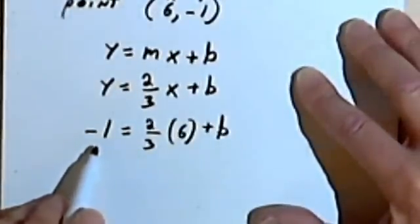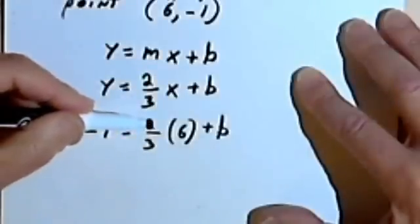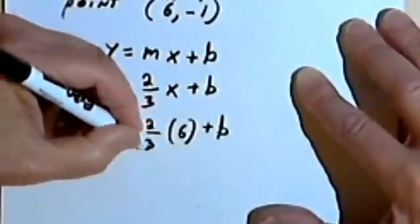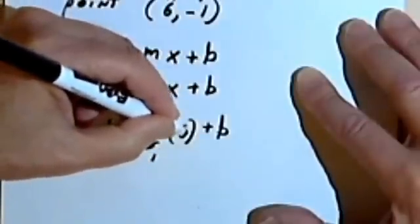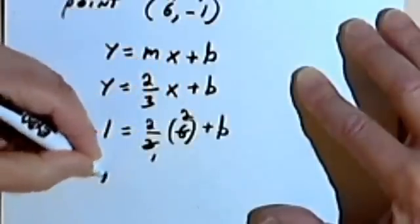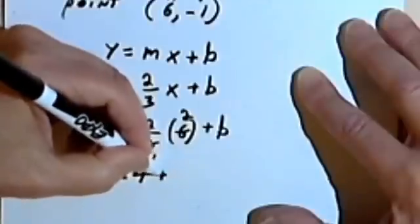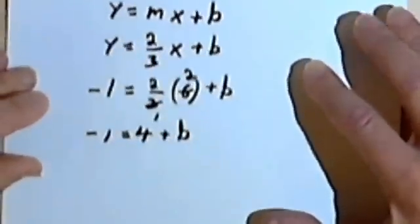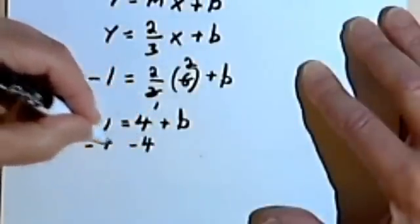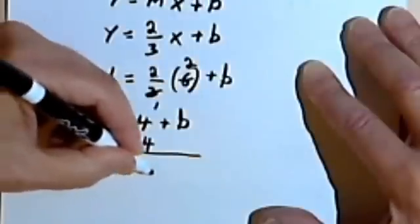Now it looks like I should be able to figure out what the b is. Starting out with two-thirds times 6, I know that I can take this 3 and divide it by 1, and take this 6 and divide it by 2. So that's going to give me a 4. So I've got negative 1 equals 4 plus b. Now to find b, all I have to do is subtract 4 from both sides, and I'll get negative 5 equals b.